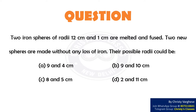Two iron spheres of radii 12 cm and 1 cm are melted and fused. Two new spheres are made without any loss of iron. Their possible radii could be: A) 9 and 4 cm, B) 9 and 10 cm, C) 8 and 5 cm, D) 2 and 11 cm.